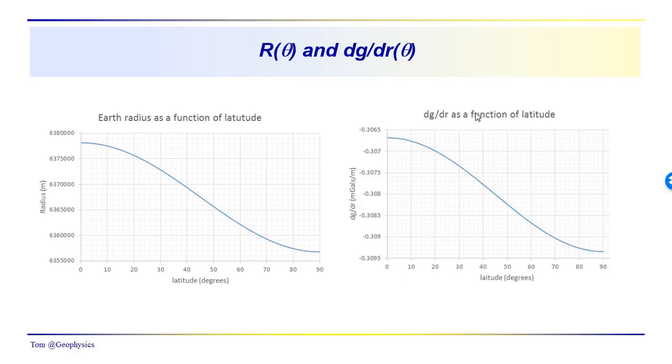And then we see dg/dr, obviously as we get closer to the polar region, this change becomes more negative because we're closer to the center of the earth. So the change in the acceleration due to gravity with the change in elevation of one meter is going to be greater in the polar region than it is in the equatorial region. So these are just general graphical representations of those relationships.